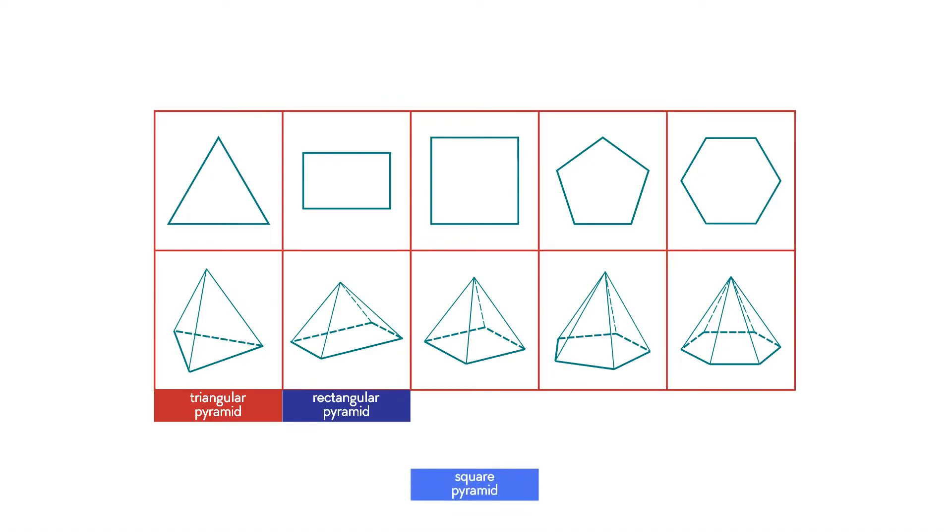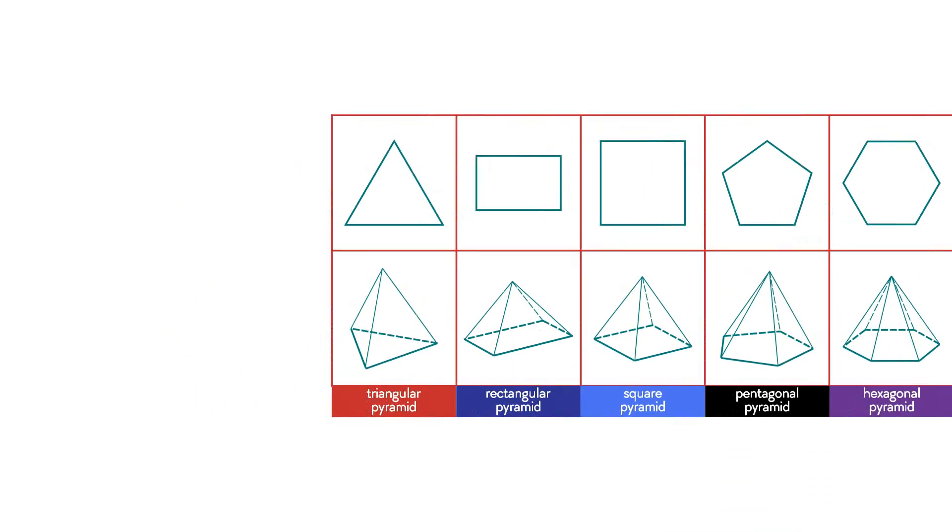In a square pyramid, the base is a square. The base of a pentagonal pyramid is a pentagon. In a hexagonal pyramid, the base is a hexagon.